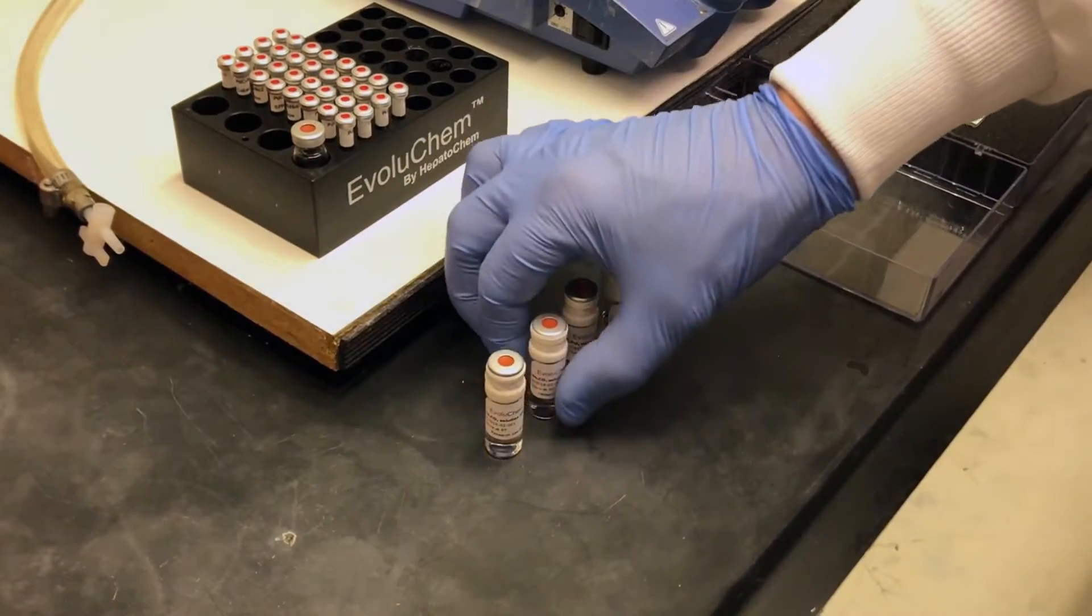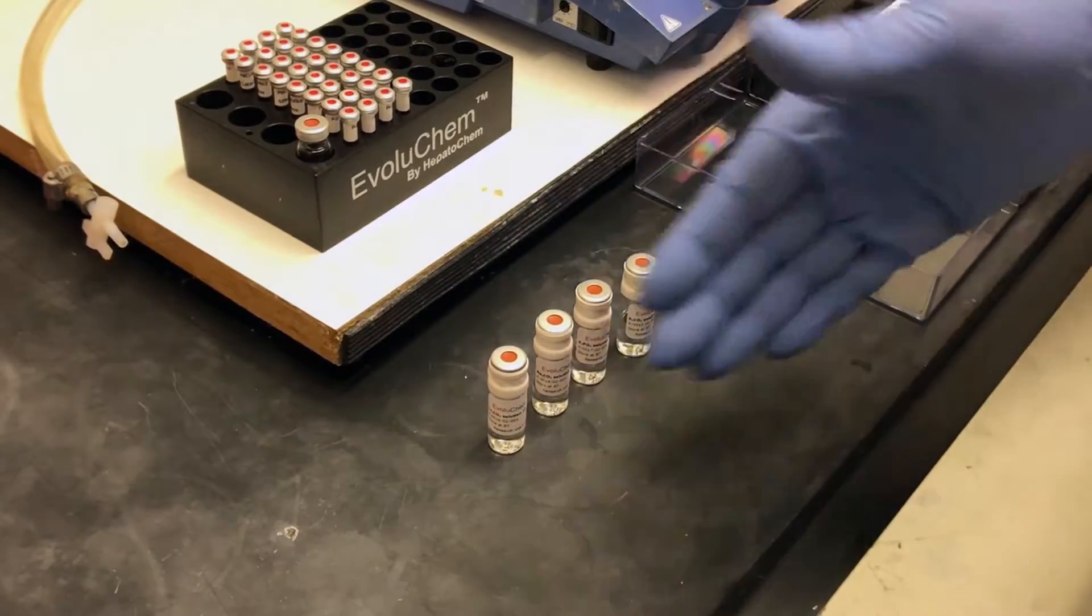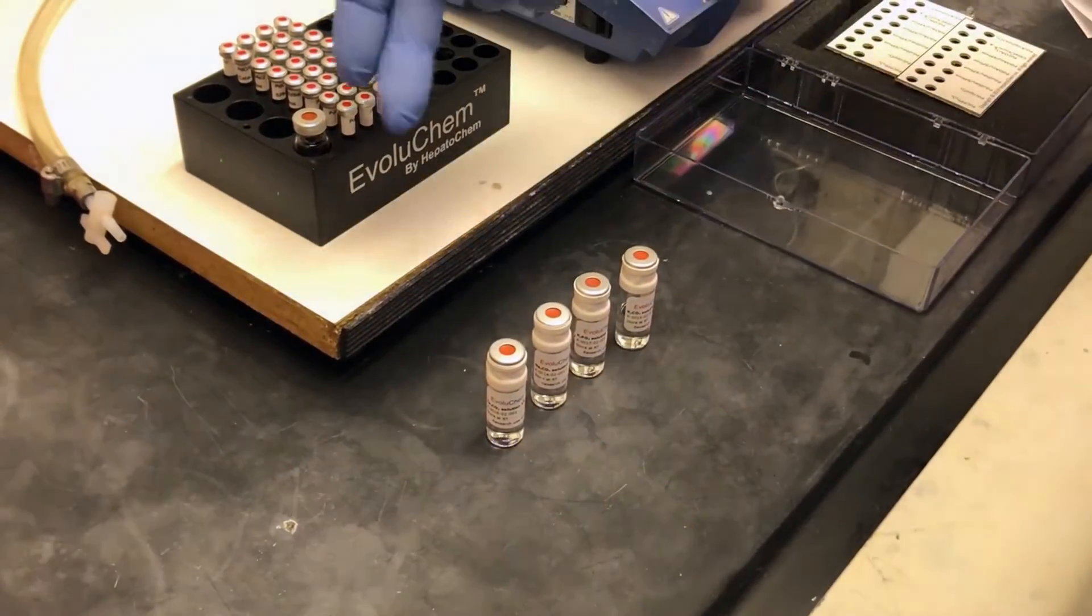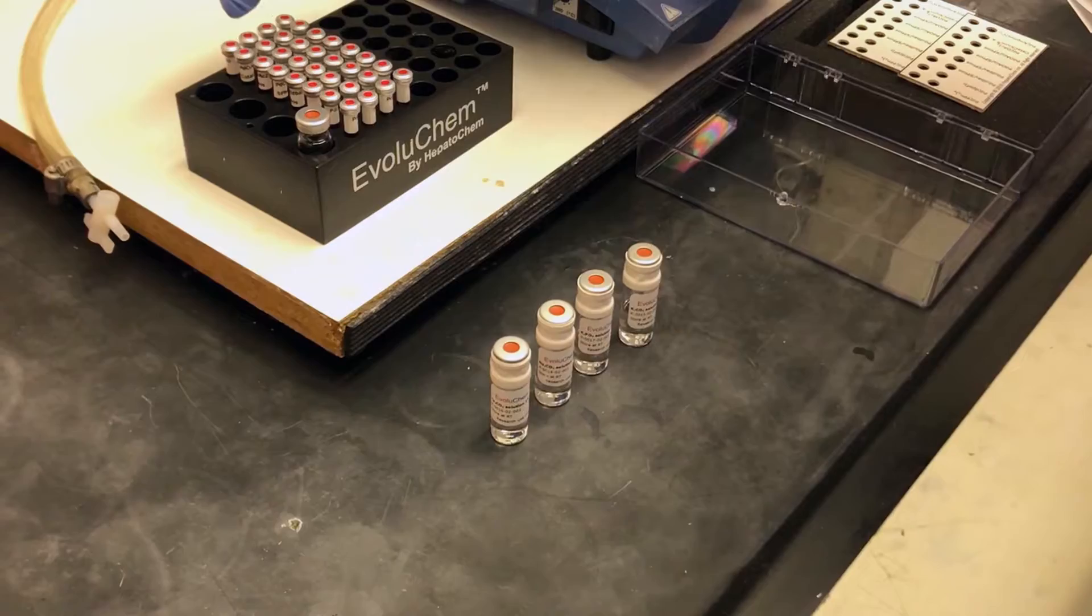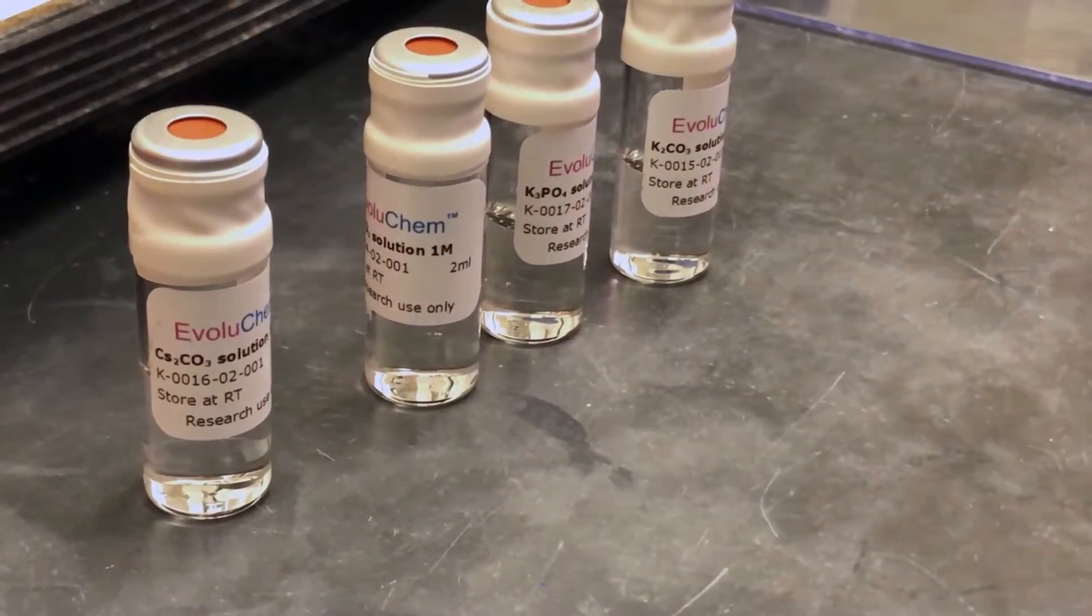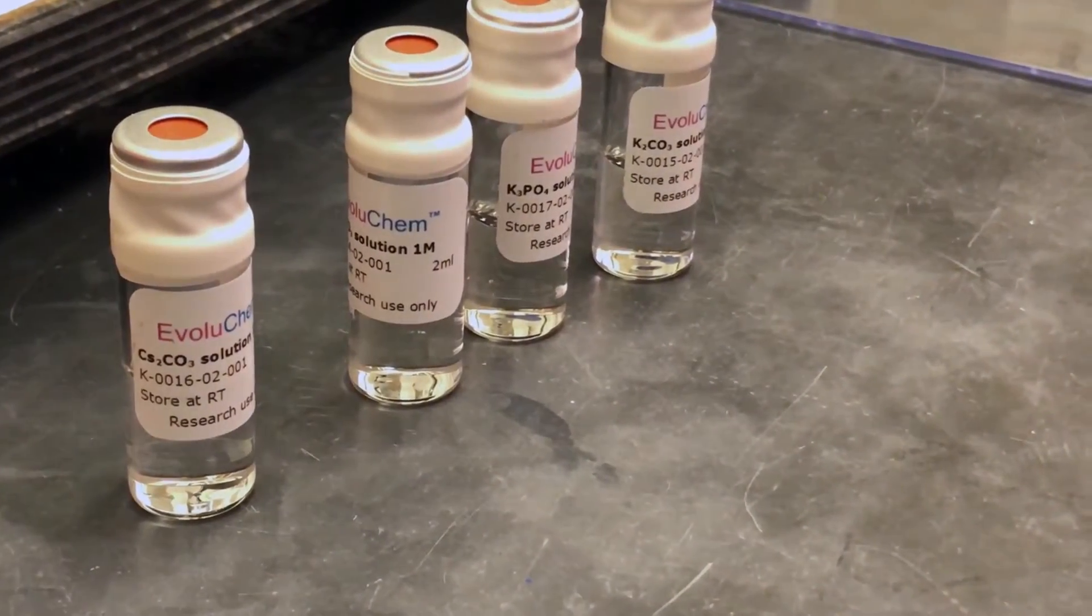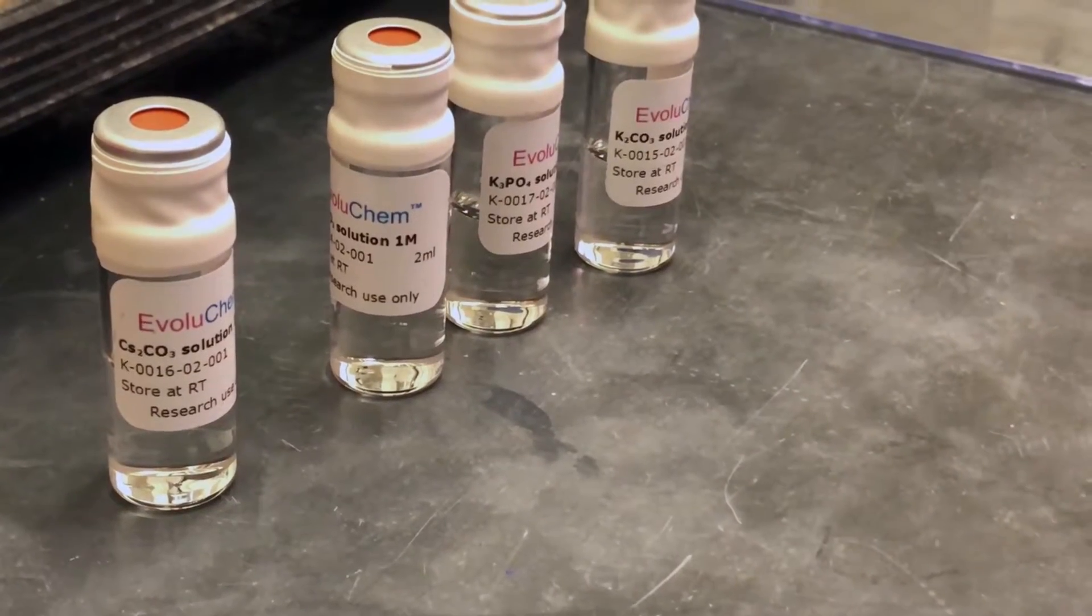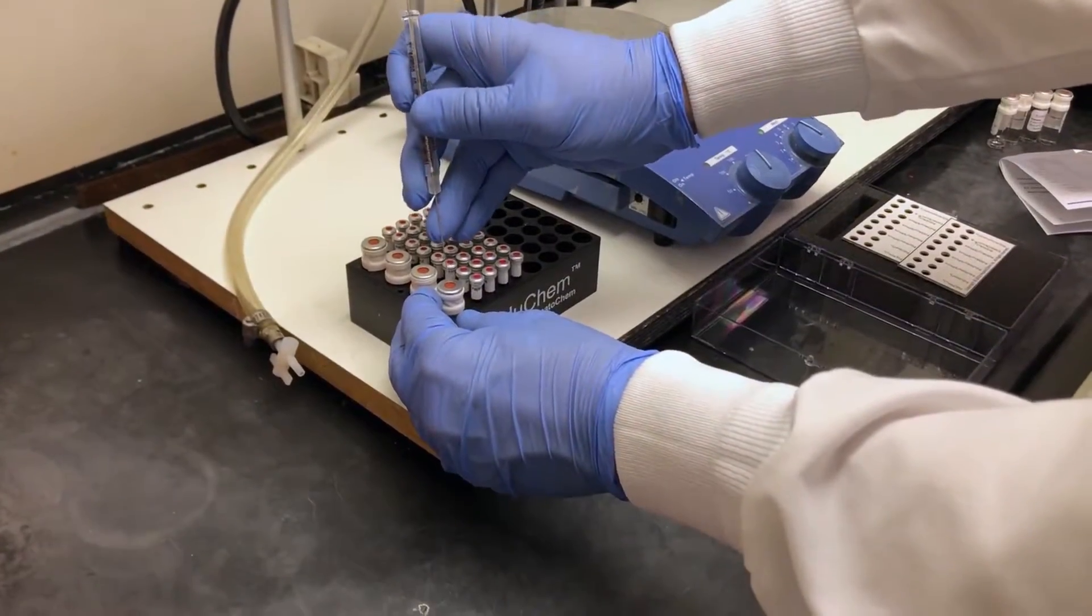Now that the substrate solution has been added to all of the catalysts, there are four different base solutions that can be tested against the substrate solution. In the first column, we're using cesium carbonate and we'll transfer 30 microliters into each of the catalysts in the first column.